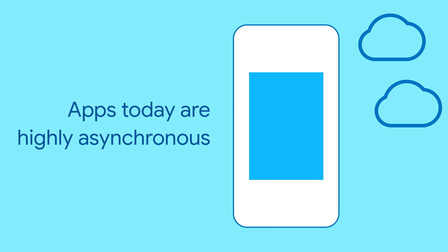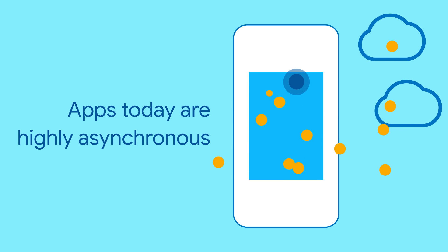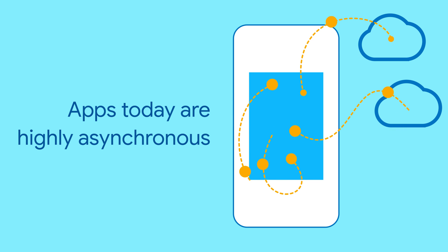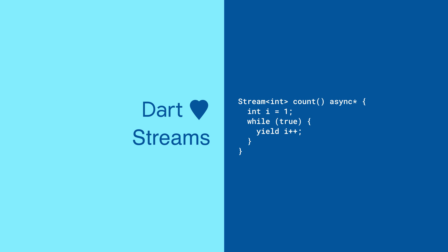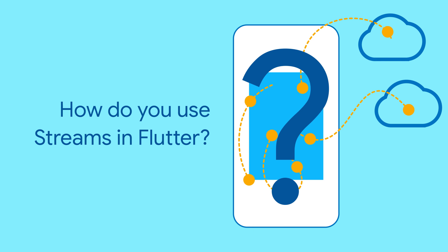Modern apps are highly asynchronous. Anything can happen at any time, in any order. You can think of these events as streams of data. Dart has great support for asynchronous streams of data using streams. How do you use streams in a Flutter app?